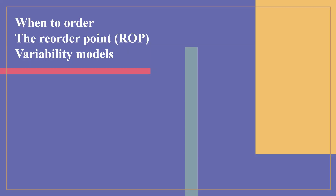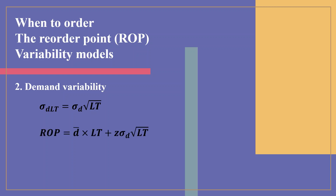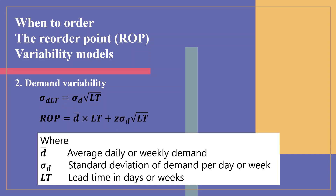When data on lead time demand are not readily available, the previous model cannot be used. However, data are generally available on daily or weekly demand and on the length of lead time. Using those data, a manager can determine whether demand and/or lead time is variable and find the related standard deviation. If only demand is variable, then sigma DLT equals sigma D multiplied by the square root of LT, and the reorder point is: ROP equals D-bar multiplied by LT plus Z multiplied by sigma D multiplied by the square root of LT, where D-bar is average daily or weekly demand, sigma D is the standard deviation of demand per day or week, and LT is lead time in days or weeks.